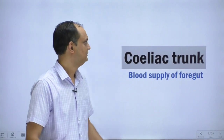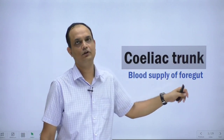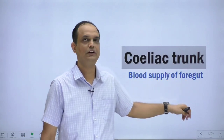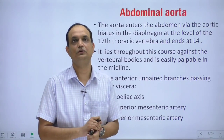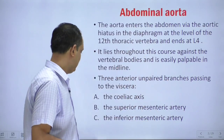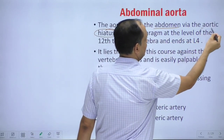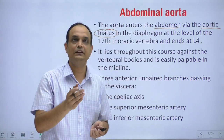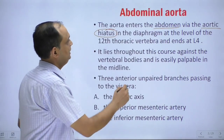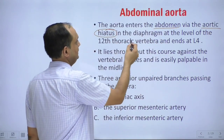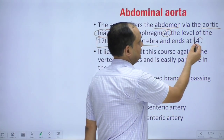Hello students, today we will discuss the celiac trunk, also known as the blood supply of the foregut. Before studying the celiac trunk, you should know about the abdominal aorta. The abdominal aorta enters the abdomen via the aortic hiatus, which is present between the diaphragm and the vertebral column at the level of T12. The aorta enters the abdomen by the aortic hiatus at the level of the twelfth thoracic vertebra, and it terminates at the level of L4.